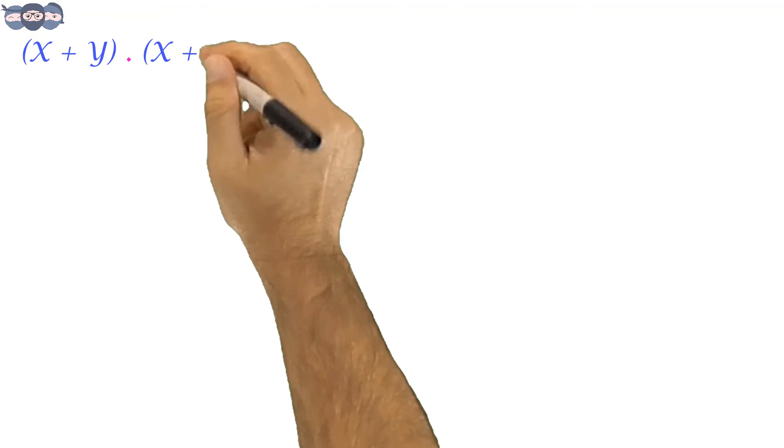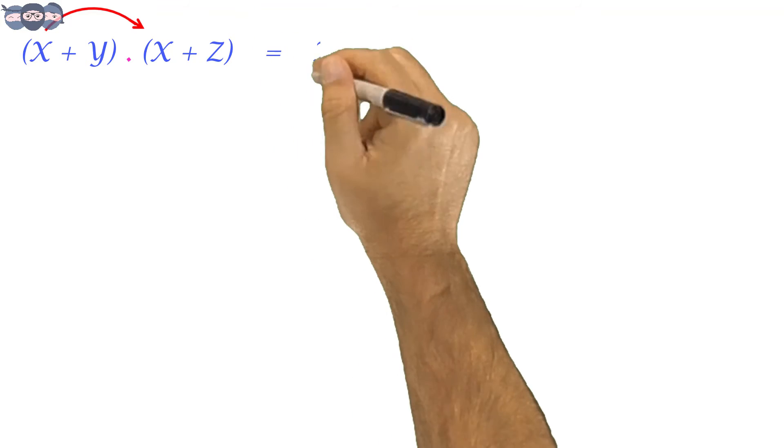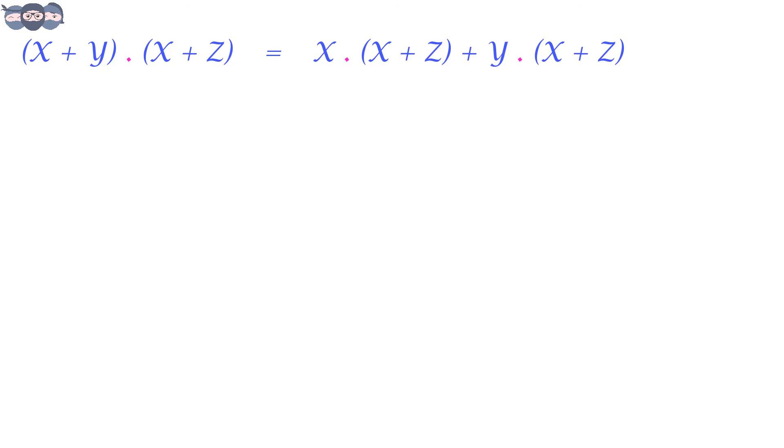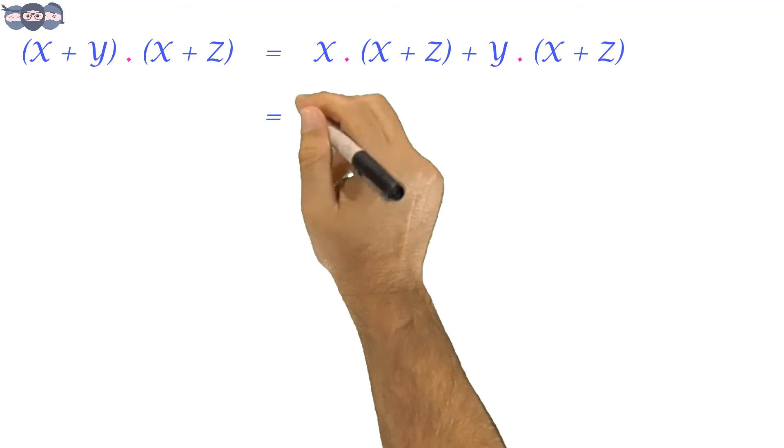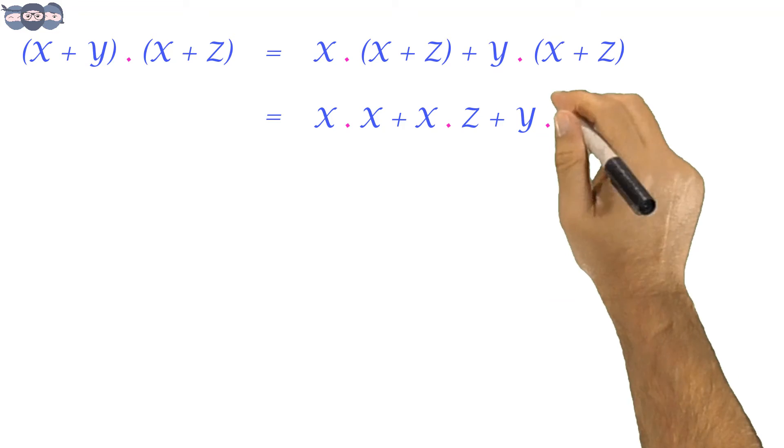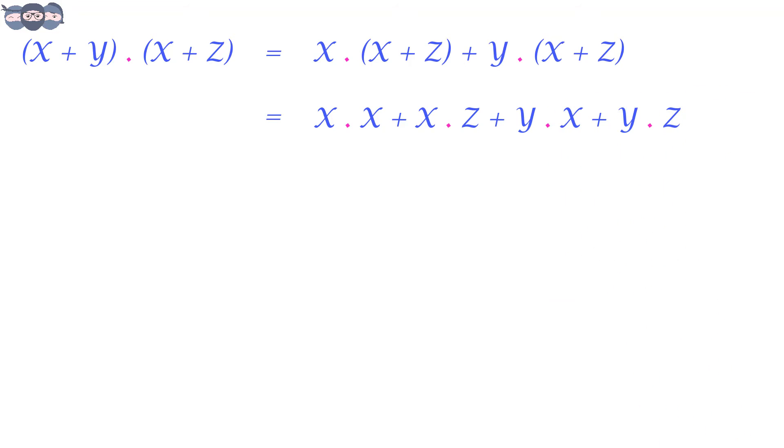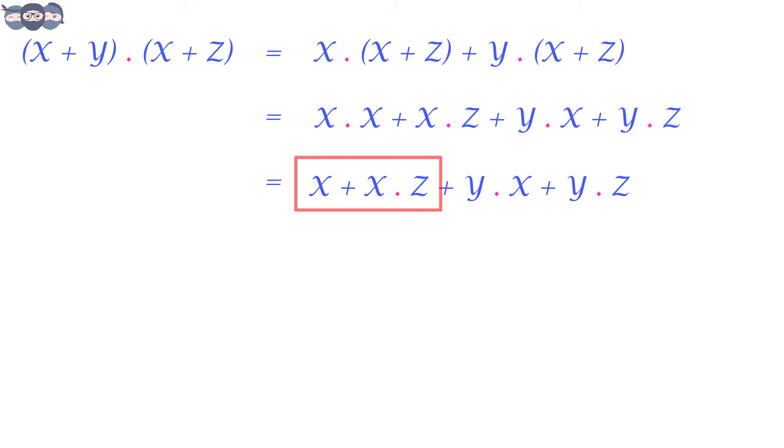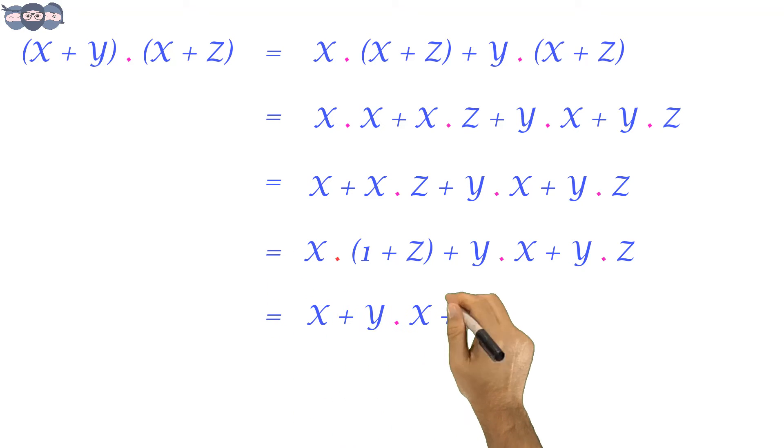Consider another example. We can distribute X over the parenthesis and later Y over the parenthesis. Remember to keep the Boolean operation same. Let's expand the terms. X and X or X and Z. This is an OR operation. Y and X or Y and Z. X and X is X itself. From these two terms, let's take X outside the parenthesis. You all know that 1 or Z is 1. We are left with only X.